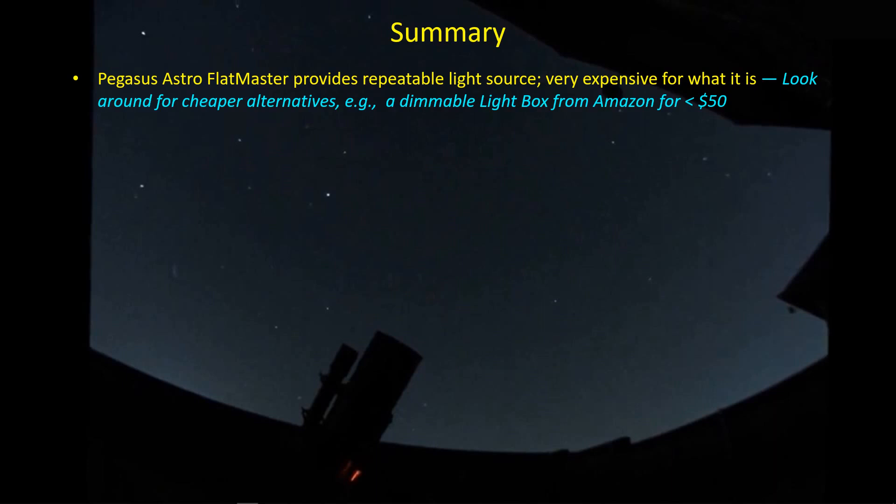There are much cheaper alternatives, for example, using a dimmable light box. You can get them from Amazon for, heck, less than 50 bucks. And if you're only dealing with the smaller refractors, you can probably get it for less than 25 bucks, worth a test anyway.